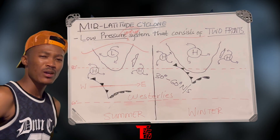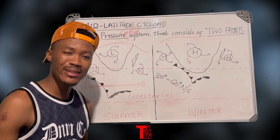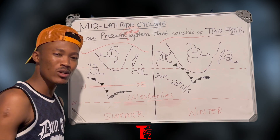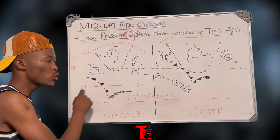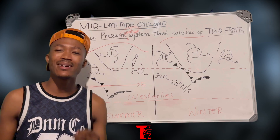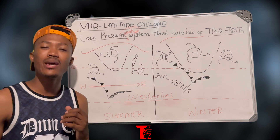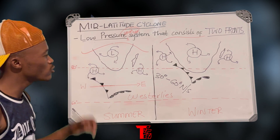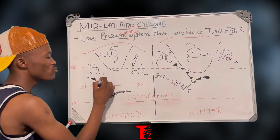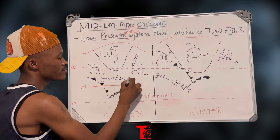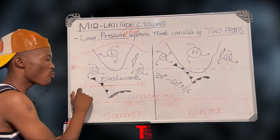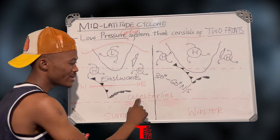These westerly winds are the ones that determine the general direction of this system. They are the reason why the mid-latitude cyclone moves from west to east. In your examination, when asked to determine the general direction of the mid-latitude cyclone, you should recall that it moves from west to east — or in simple terms, eastwards. The reason it moves from west to east is due to the westerly winds; it is driven by westerly winds.